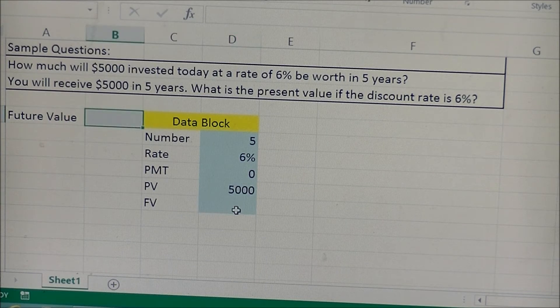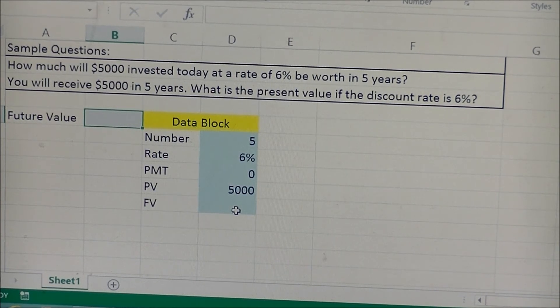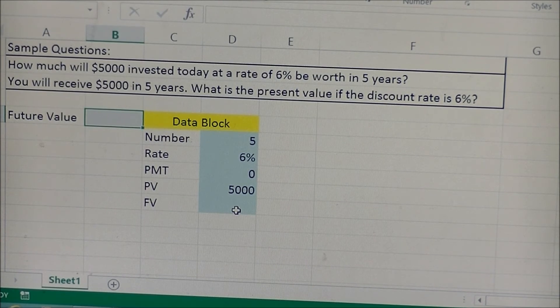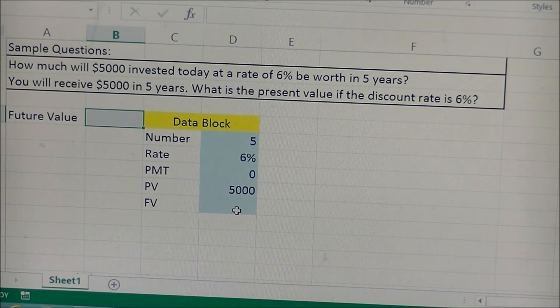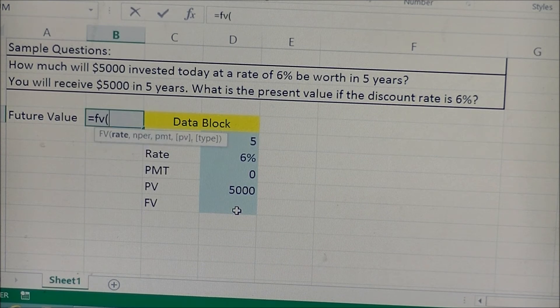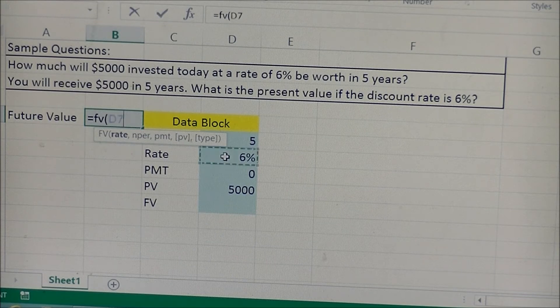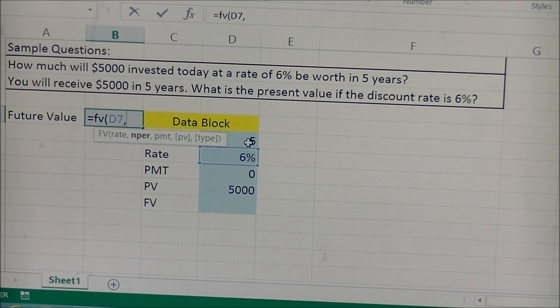So to set up the template, you're going to enter in the formula that Excel uses to solve the future value problem, and it's as simple as type in your equal sign. Type in FV for future value. Open up a parenthesis, and just follow the prompts that Excel will give you. It's asking for rate, so we'll click on that. Separate it with a comma, and then it's asking for number of years.